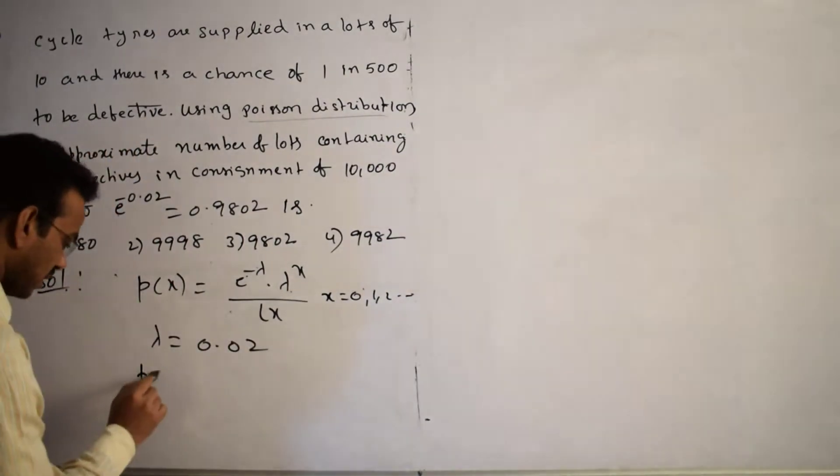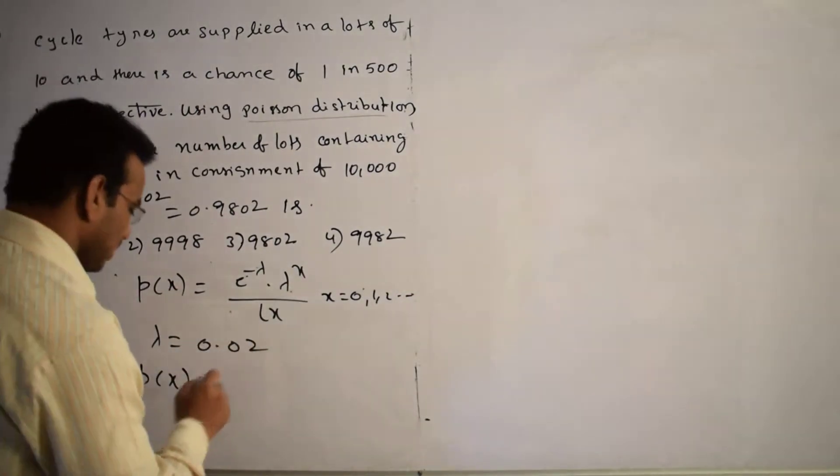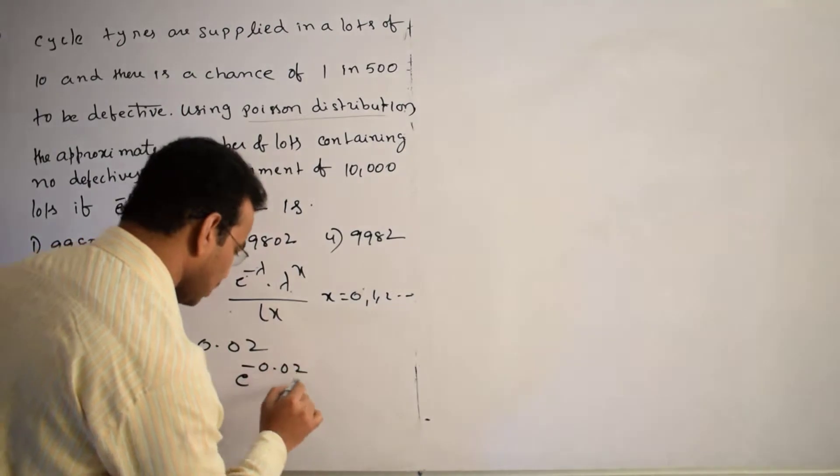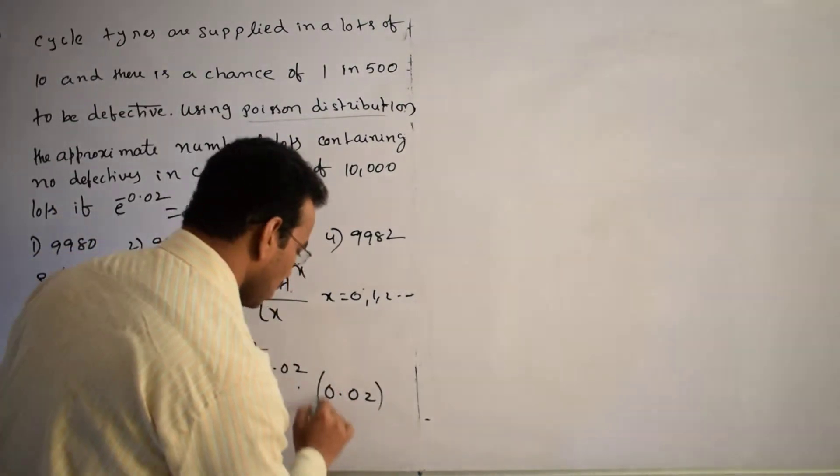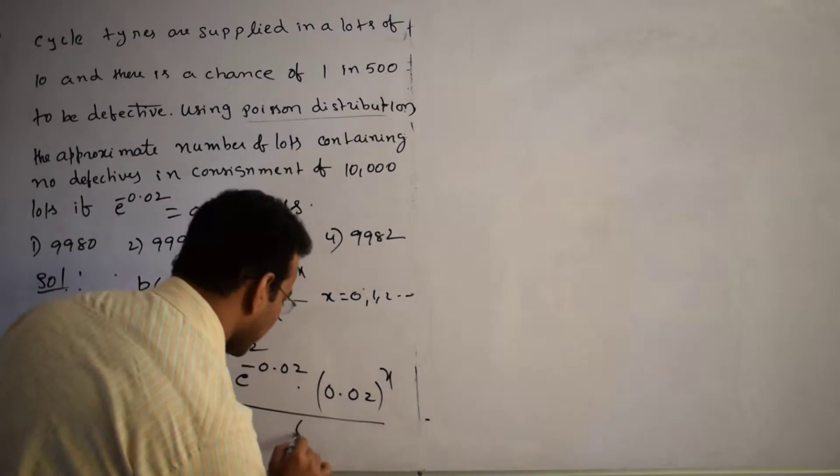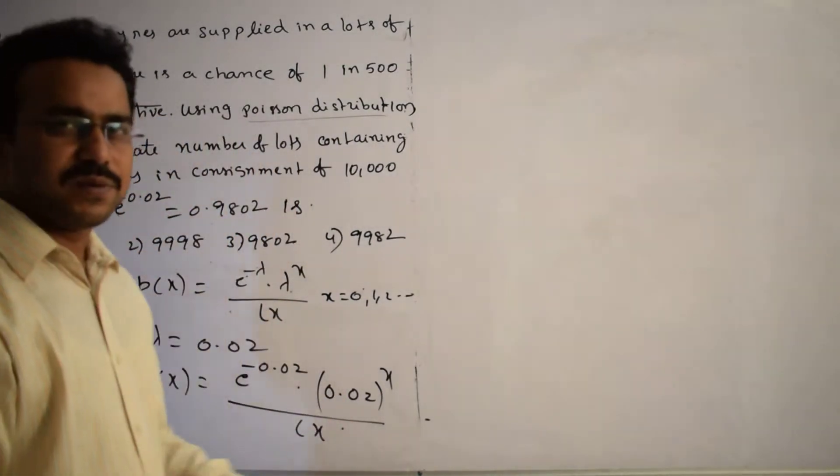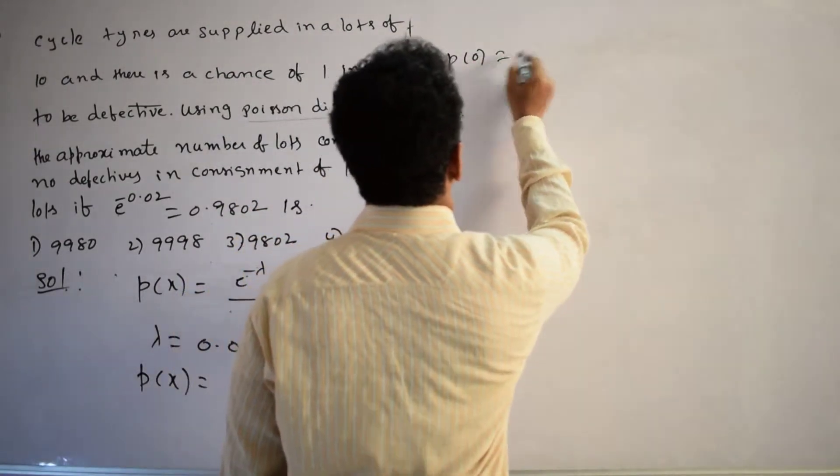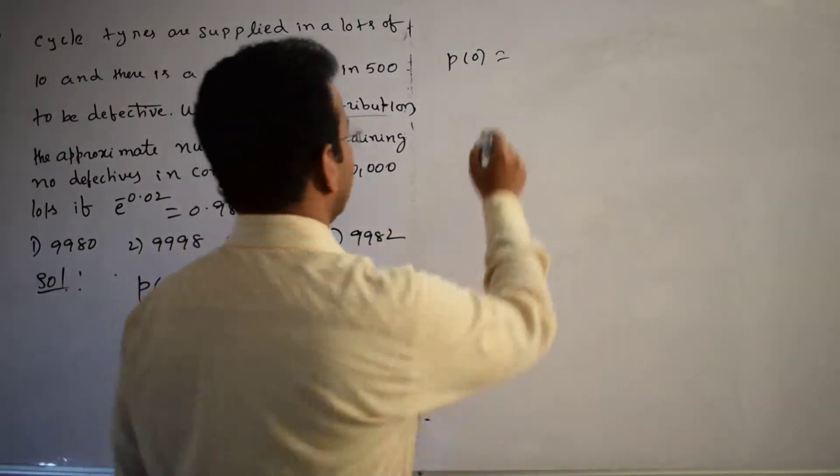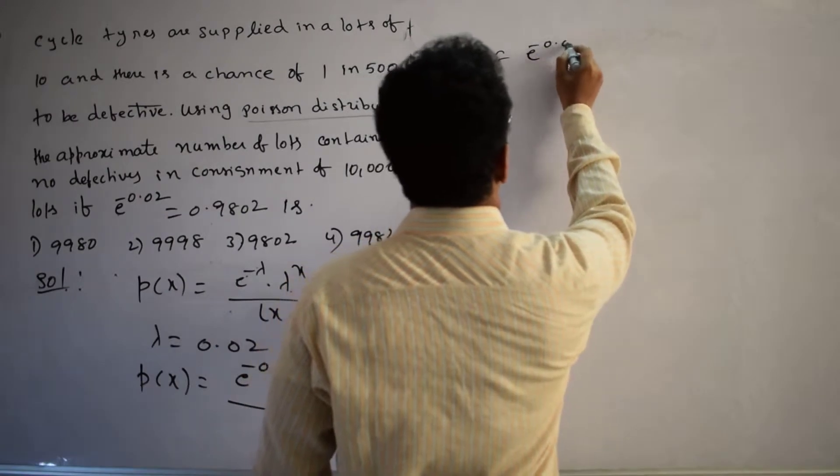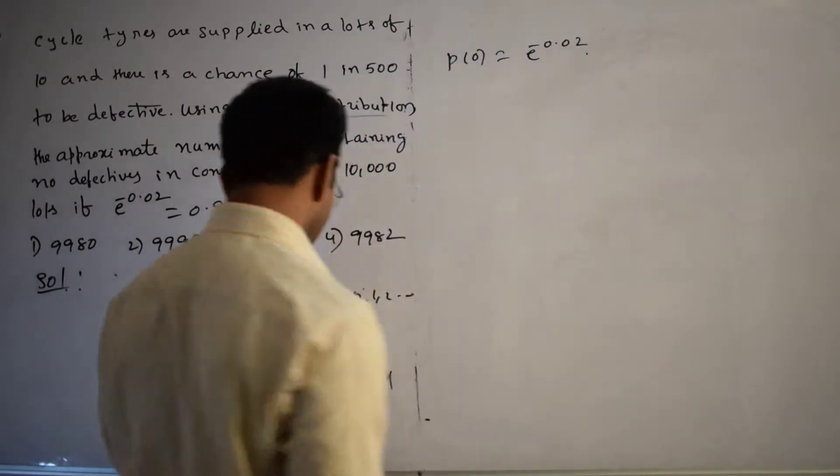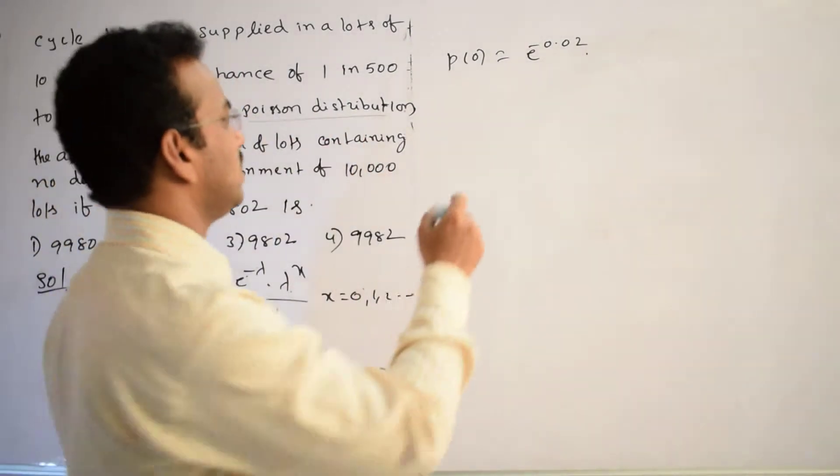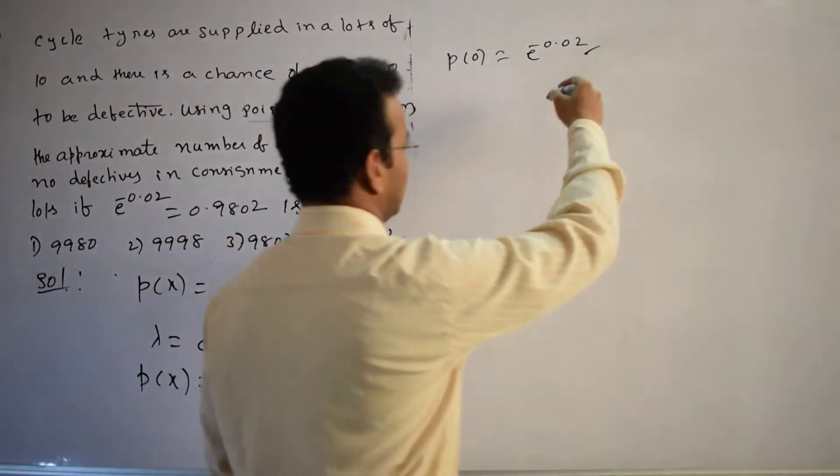Now, what is the distribution? Here, P(x) equals e power minus 0.02 into 0.02 whole power x by factorial x. But we require the probability of no defective. Probability of no defective means simply P(0), which equals e power minus 0.02 into 0.02 whole power 0. How much? 1 by 0 factorial means how much? 1 only. This is the required result.